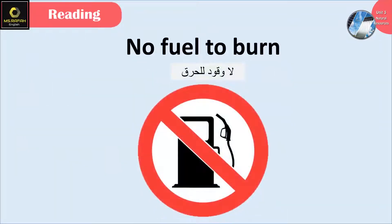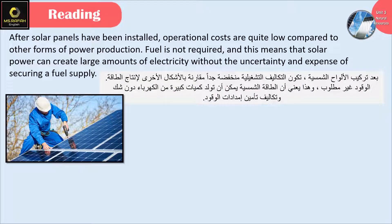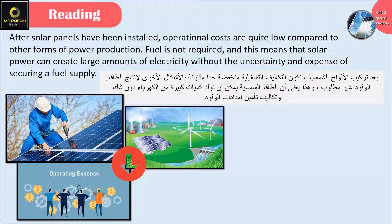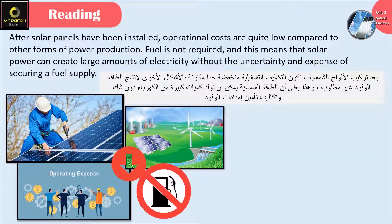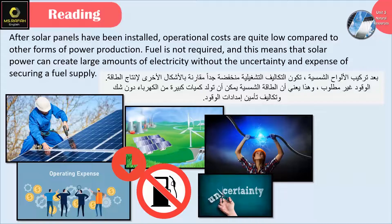No fuel to burn. After solar panels have been installed, operational costs are quite low compared to other forms of power production. Fuel is not required. This means that solar power can create large amounts of electricity without the uncertainty and expense of securing a fuel supply.